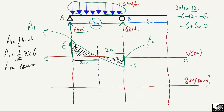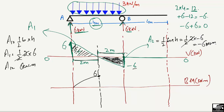The bending moment rises to 6 kilonewton-meters at the midpoint. Triangle A2 covers the right half of the span: area = 0.5 × 2 × (minus 6) = minus 6 kilonewton-meters. Adding A1 and A2, the bending moment returns to zero at support B. On the overhanging portion beyond B, there is no shear force and no load, so the bending moment remains zero throughout that section.